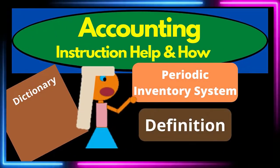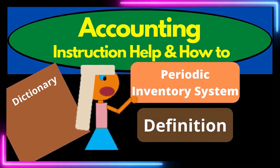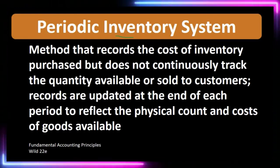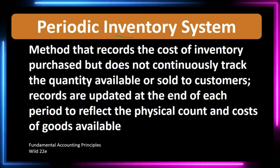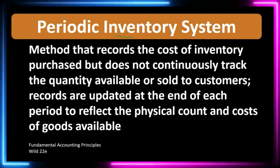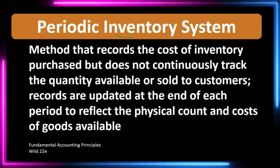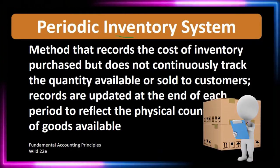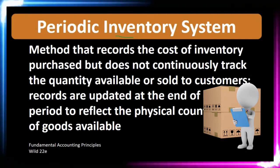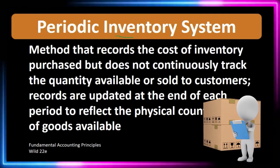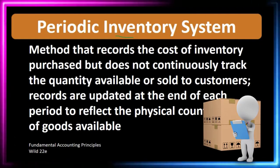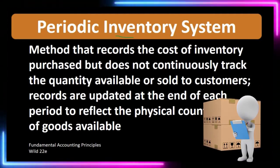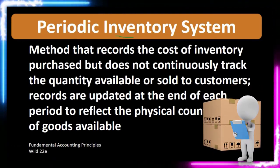Hello. In this lecture we're going to define periodic inventory system. According to Fundamental Accounting Principles, 22nd edition, the definition of periodic inventory system is: a method that records the cost of inventory purchased but does not continuously track the quantity available or sold to customers. Records are updated at the end of each period to reflect the physical count and cost of goods available.